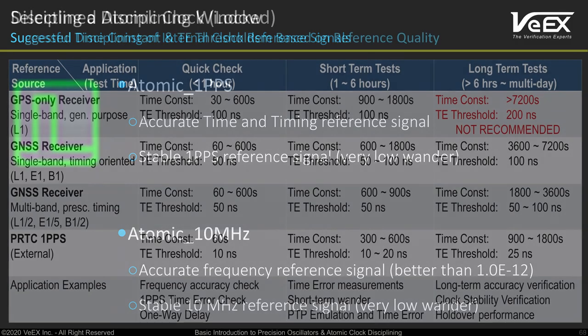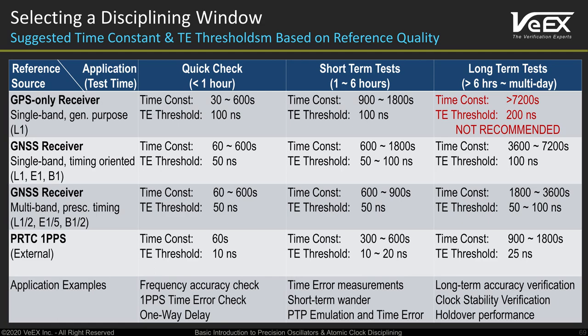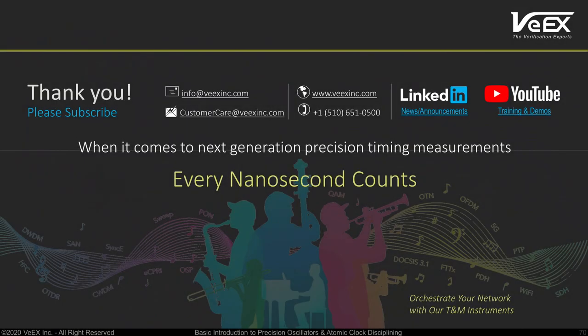You are all set. Here are some generic recommendations for setting time windows depending on applications. Remember, there is always a trade-off between convenience and quality, so choose wisely based on your application requirements and test environment. Longer tests, like measuring long-term clock stability over multiple days, would require longer time constant and more stable inputs. Thank you for watching this training session. We hope we have shined some light into the sometimes obscure world of timing and synchronization. Should you have any questions, feel free to contact us. If you found this video useful, please like it, subscribe to our channels and share it with your colleagues.